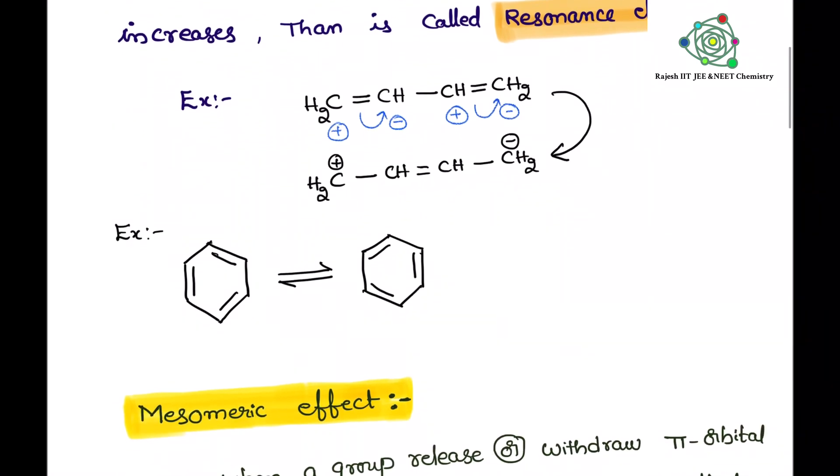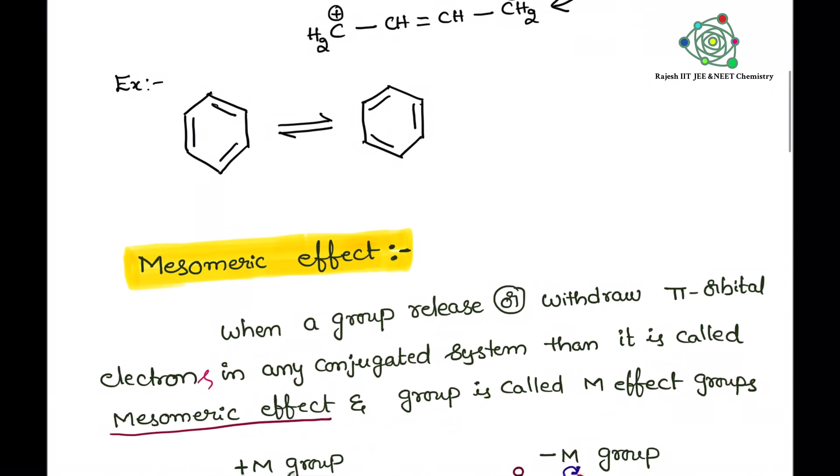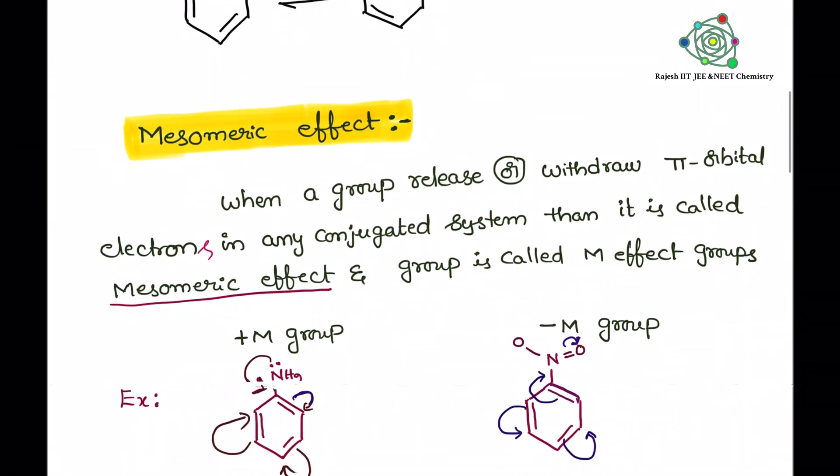Now come to the mesomeric effect. What is meant by mesomeric effect? When a group release or withdraw pi orbital electrons or pi bonded electrons in any conjugated system, then that is called as mesomeric effect.